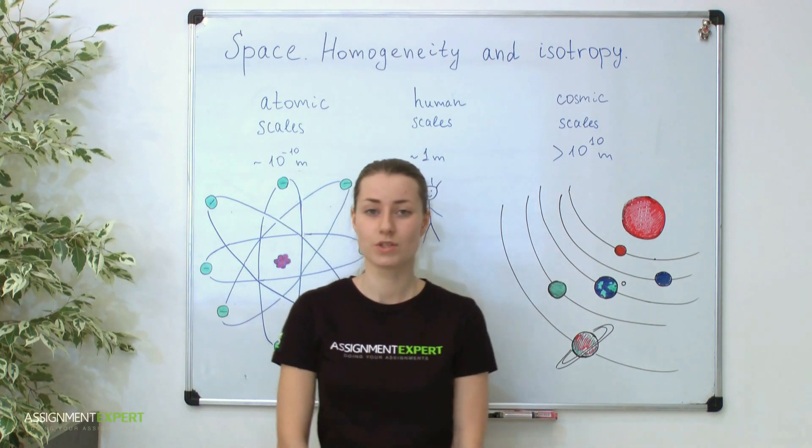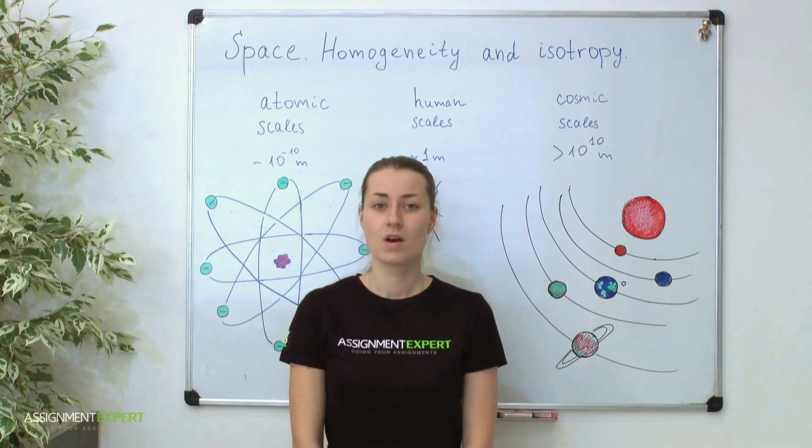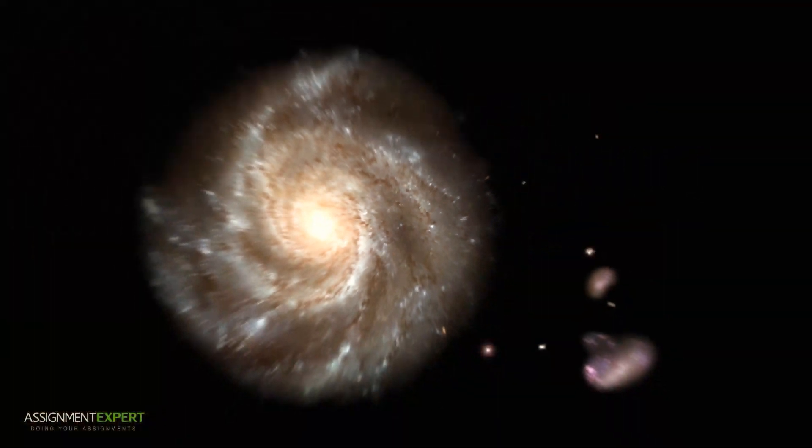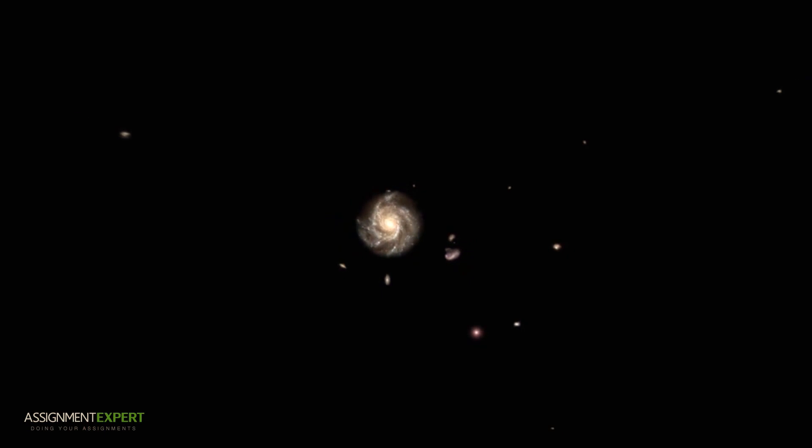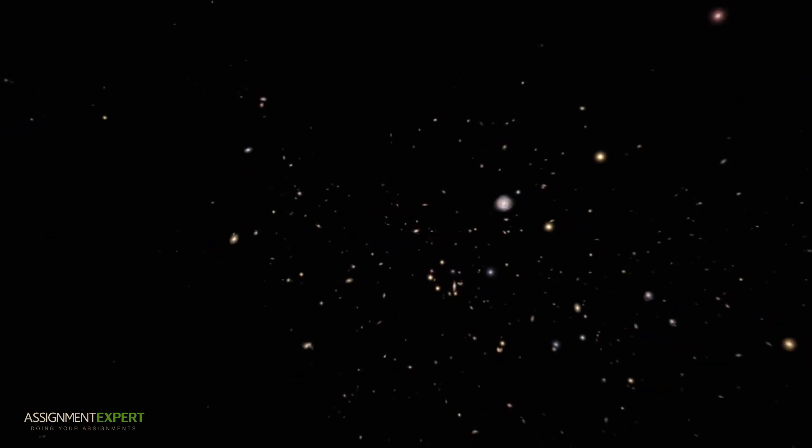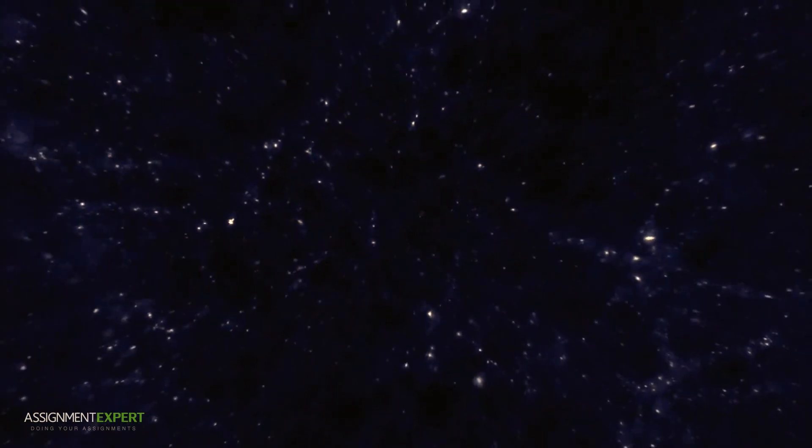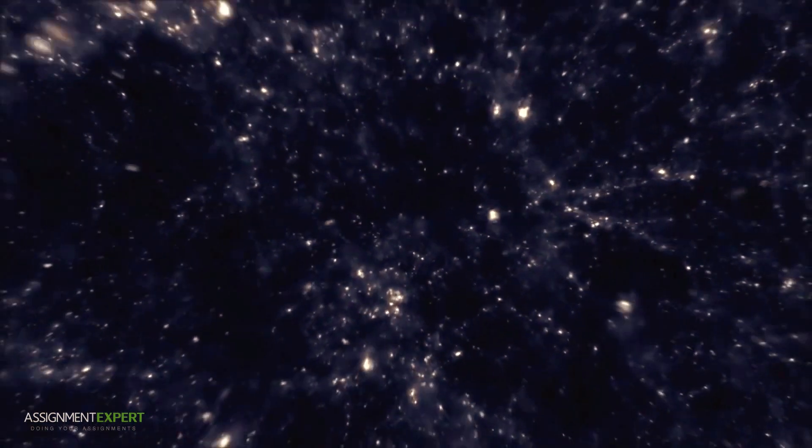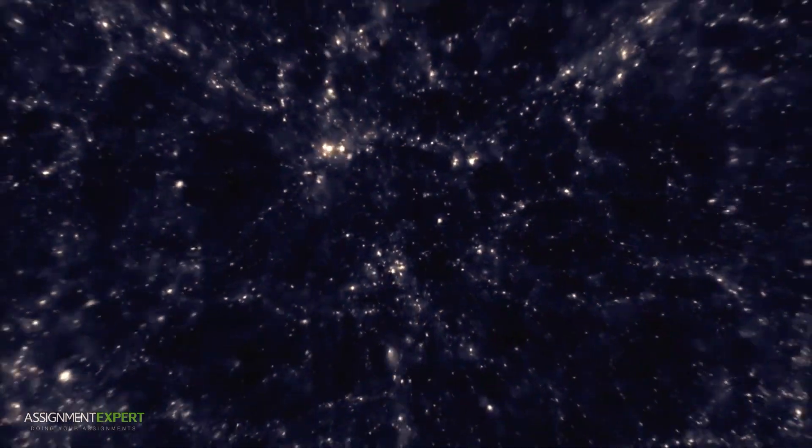But if you come up to such scales as cosmic, you will surprisingly see the total different situation. Look at the following video. It's NASA demonstration of universe large scale structure. Great filaments of matter are connected in a cosmic web and the largest and strongest of them correspond to the densest collections of matter in our universe today, such as clusters and superclusters of galaxies.